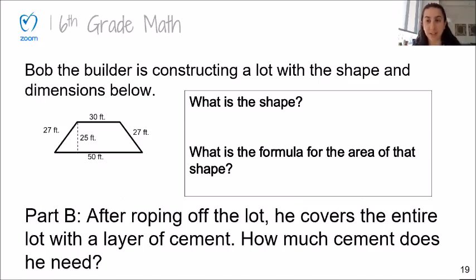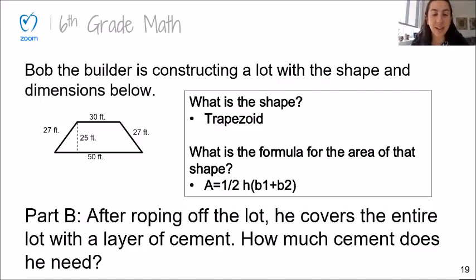If you identified this shape as a trapezoid, you are exactly right because it is two parallel sides and four sides. And you can remember from yesterday, the formula for the area of the trapezoid is one half times height, parentheses, base one plus base two. Make sure you have that formula written on your paper. Now it's your turn to solve. Pause the video and take one minute using what we learned yesterday to find the area of this trapezoid.